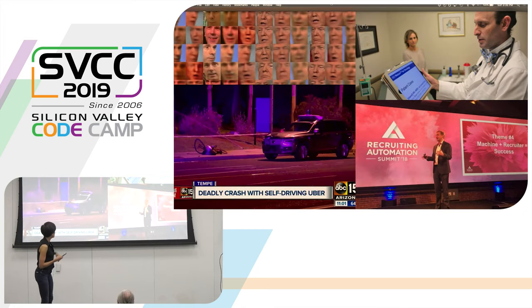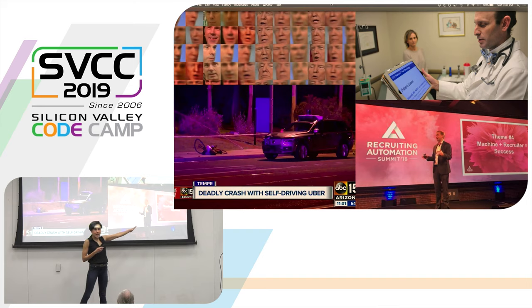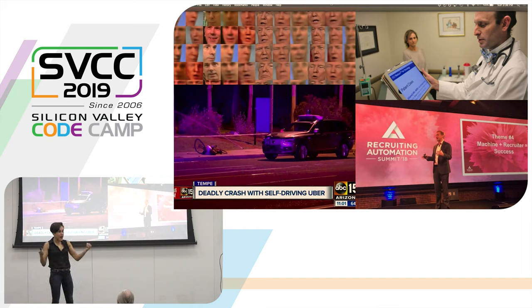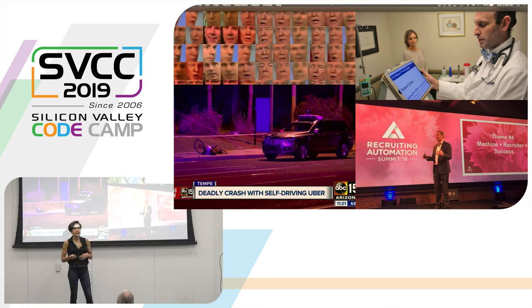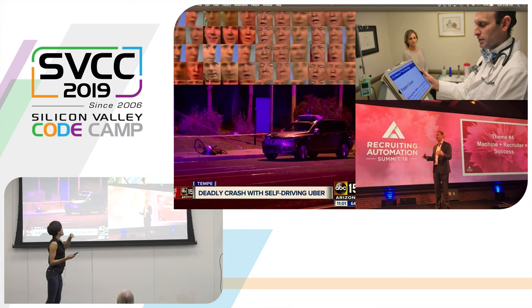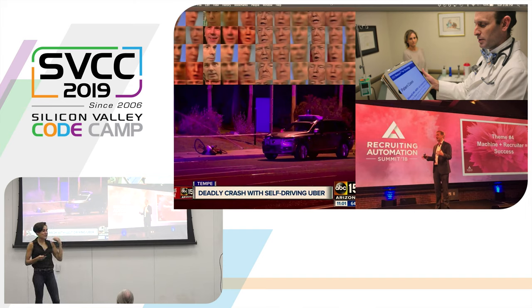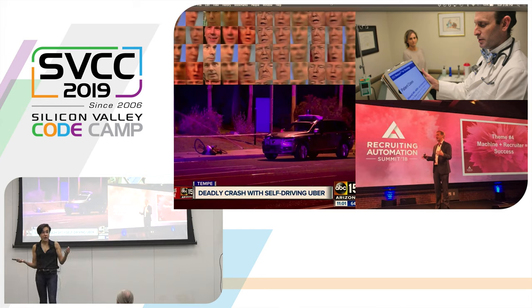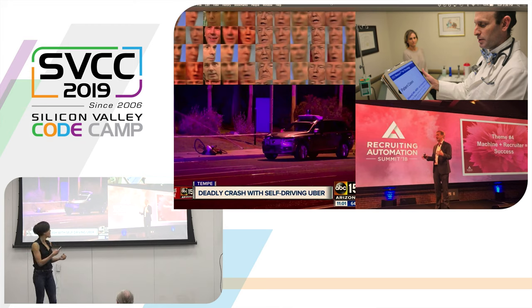We touched on some of these: the Uber self-driving car killing the pedestrian; the Amazon AI HR tool that was actually in use from 2014 to 2017 — only after it was discovered that there was bias baked into the model did they decide to take it offline, after it was already used for three years. Above that, IBM Watson giving incorrect treatment recommendations to cancer patients with potentially deadly consequences. And then we've seen deep fakes.